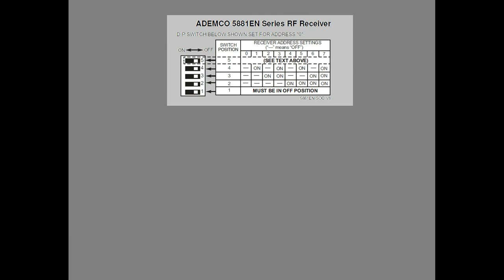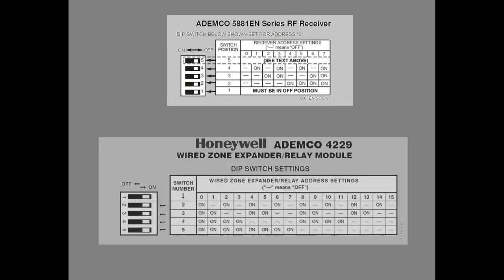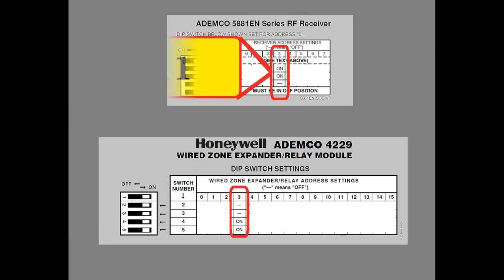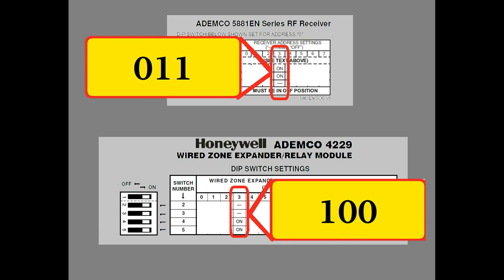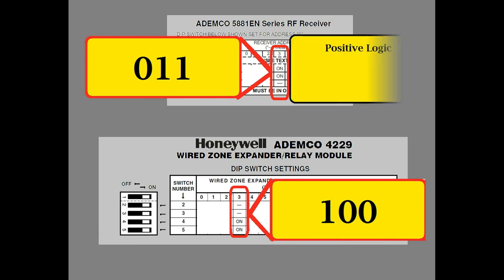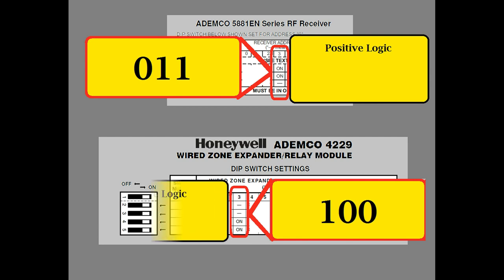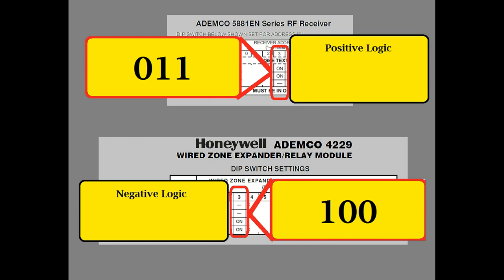We now know how to read address tables for circuit cards. With this newfound knowledge, we want to expand our home alarm system. We rush out to the store and buy a Dempco 4229 wired zone expander relay module. This will allow us to have 8 more zones in our home alarm. Wait a minute, something looks strange here. Here's address 3 for this circuit card, and this is address 3 for this one. These are most definitely not the same number. Well, the binary numbering system we just learned? That's known as positive logic. While this second card was built using negative logic. Actually, this is going to be fun — we get to learn something new about electronics.